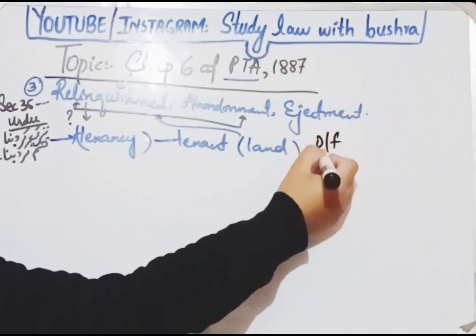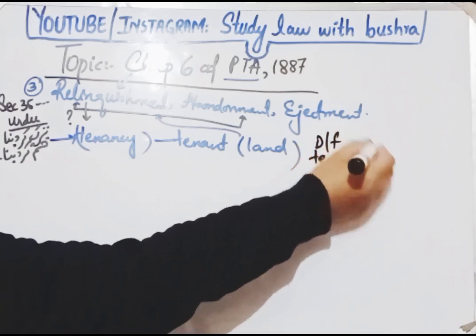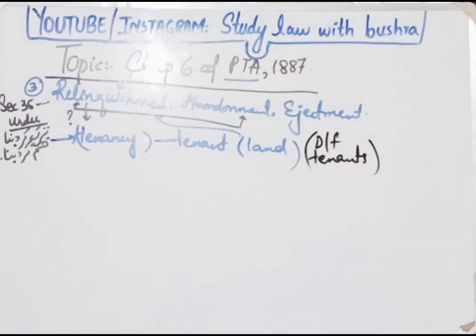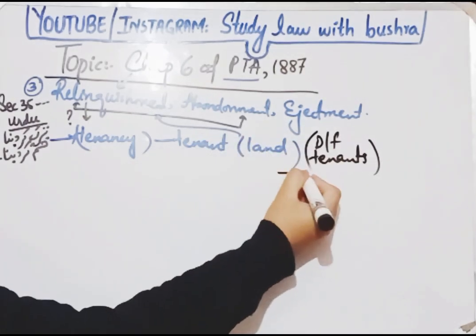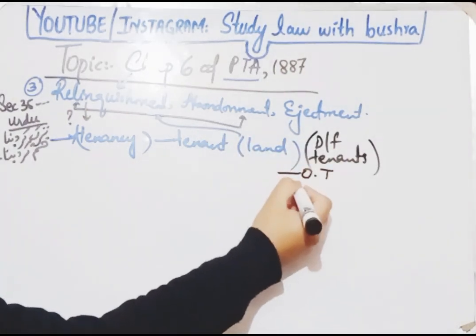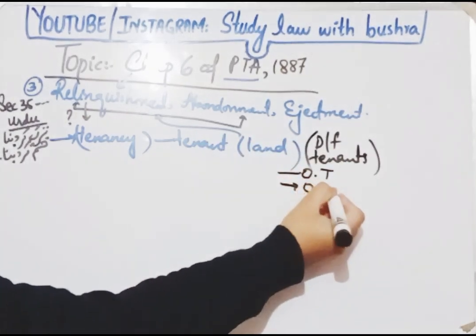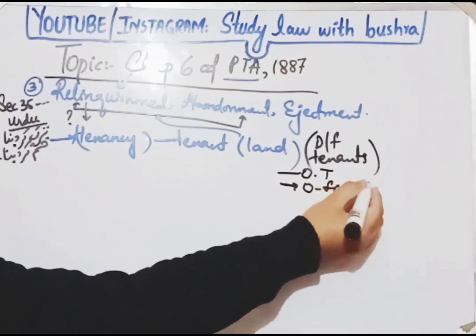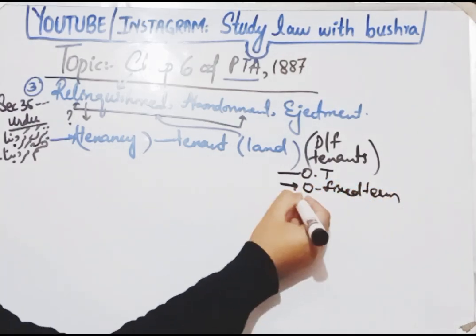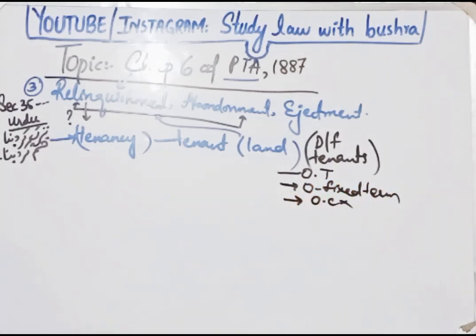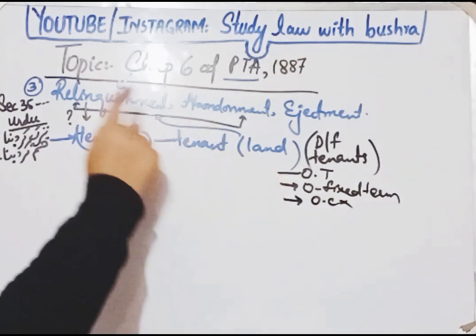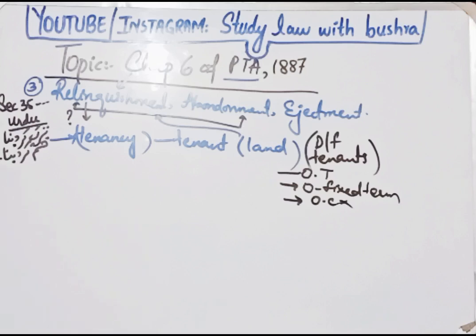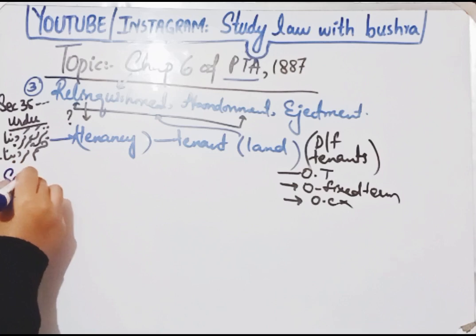In topics ke andar teen tarah ke tenants ko discuss kiya gaya hai: occupancy tenant ki baat ki gayi hai, fixed term ke liye jo tenants aate hain unki baat ki gayi hai, aur thirdly jo occupancy tenants nahi hain — in donon ke ilawa baaki jo tenants hain — unki relinquishment kis tarah se hogi. Hum one by one in tenants ke according relinquishment ke topic ko discuss karte hain.